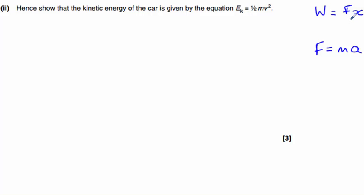Work equals force times distance, and force equals mass times acceleration. The kinetic energy EK equals the work done on the car because all that work transfers into kinetic energy. So EK = Fx. Substituting F = ma into our equation gives EK = max.